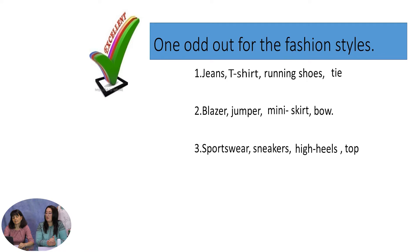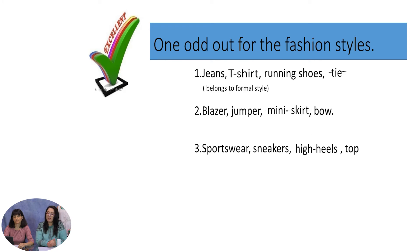So many ideas! Let's check how well you recognize all these fashion styles. Your task is to look at the list of words and choose the one odd out that doesn't fit the rest. Jeans, t-shirt, running shoes, tie — the odd one out is tie, because it belongs to formal style. Blazer, jumper, miniskirt, bow — the odd one out is miniskirt, because it belongs to trendy style. Sportswear, sneakers, high heels, top — the odd one out is high heels, because they aren't part of a sport outfit.